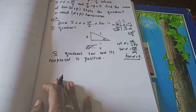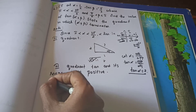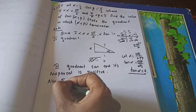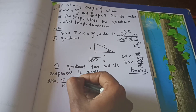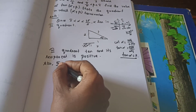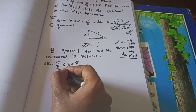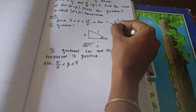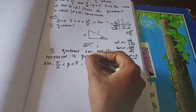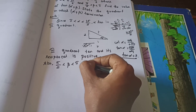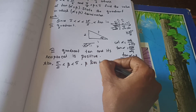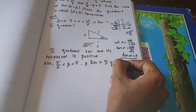Next, one more range is given: π/2 less than β less than π. So π/2 is 90° and π is 180°. Which quadrant will it lie in? Beta lies in the second quadrant.